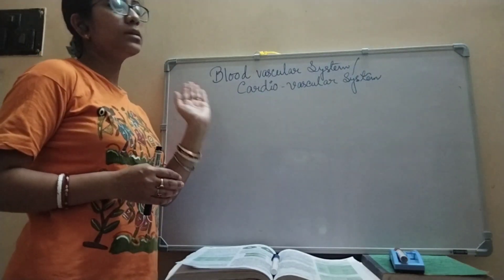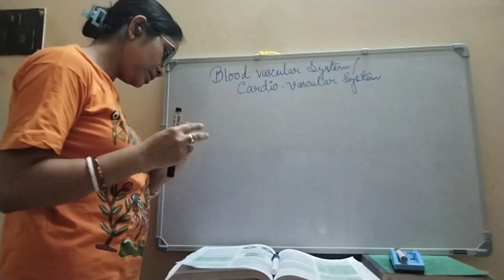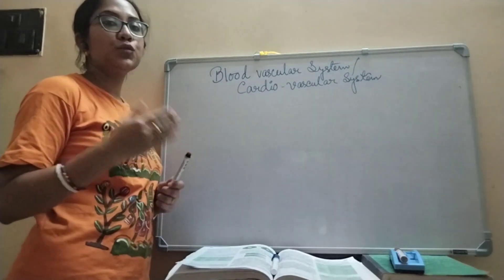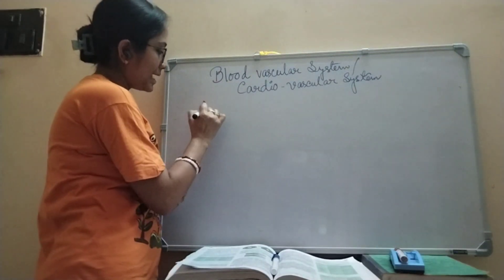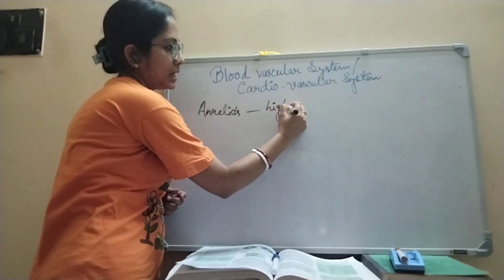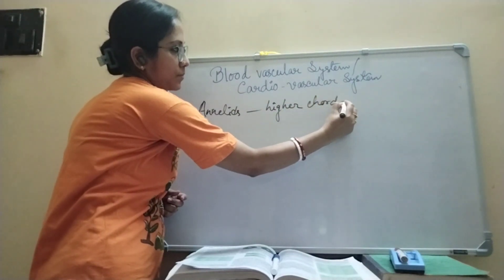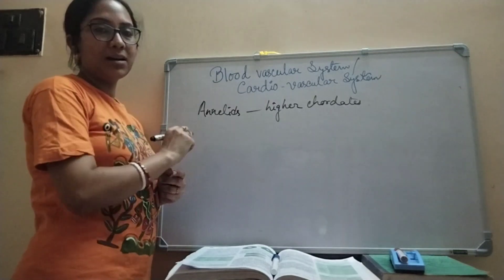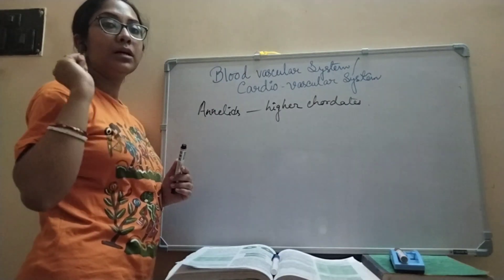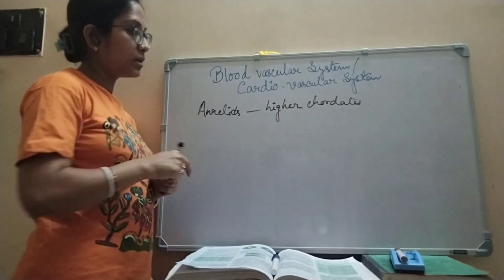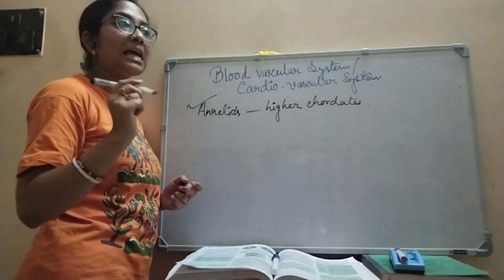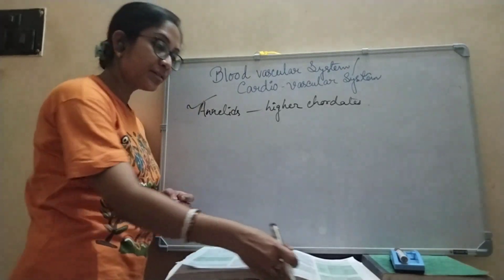The blood vascular system or cardiovascular system is a well-developed mode of circulation that starts from the annelids up to the higher chordates. A very important question you can expect is: which phylum is the first to have a well-developed circulatory system? The answer is annelids — annelids are the first metazoans to have developed a well-developed circulatory system.